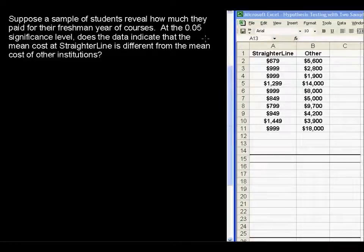Suppose a sample of students reveal how much they paid for their freshman year of courses. At the 0.05 significance level, does the data indicate that the mean cost at StraighterLine is different from the mean cost of other institutions? Here's our sample data. We have StraighterLine costs and some other institutions.